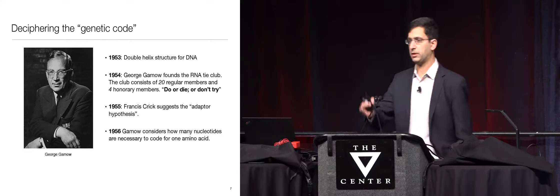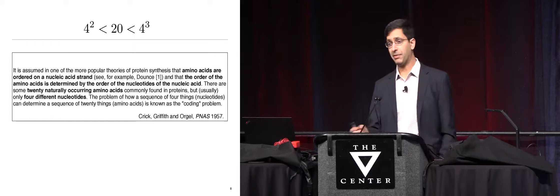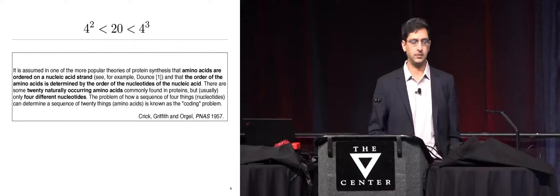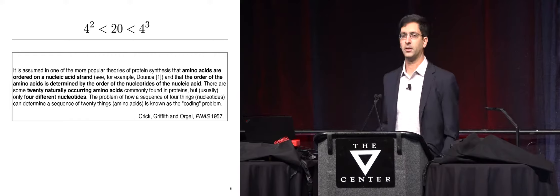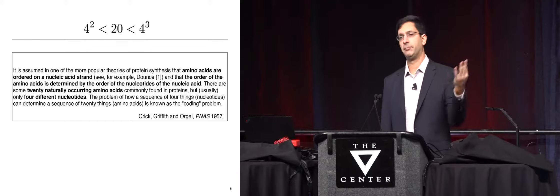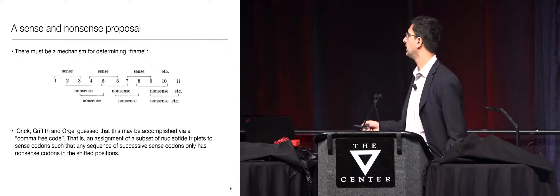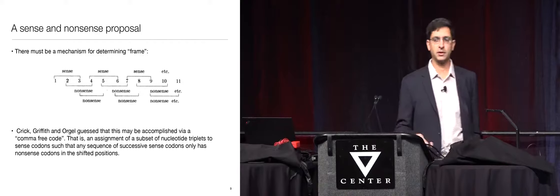Gamow really wanted to figure it all out and started coming up with mathematical theories. One of the initial insights led to a mathematics paper on which Francis Crick was an author — not widely known in the math community. It started with the observation that 20 is greater than 4 squared and less than 4 cubed. So they imagined the code must consist of three letters — some map between what they later called codons, or triplets of DNA nucleotides, and amino acids. They called this idea a comma-free code.